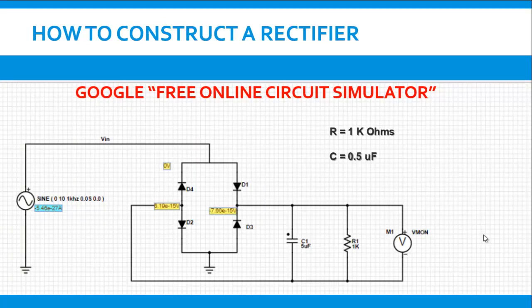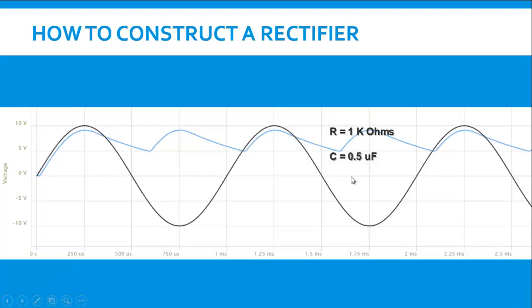In order to test the performance of the smoothening capacitor google free online circuit simulator. A lot of circuit simulator websites will be there on which you can test the performance. This is one of the circuits wherein a full wave rectifier with smoothing capacitor has been implemented. If the resistance value is taken as 1 kilo ohms and capacitance connected is 0.5 microfarad, the output that we get is something like this.